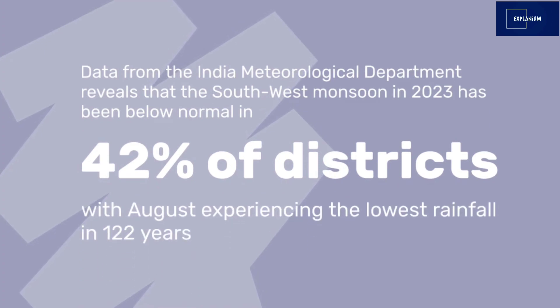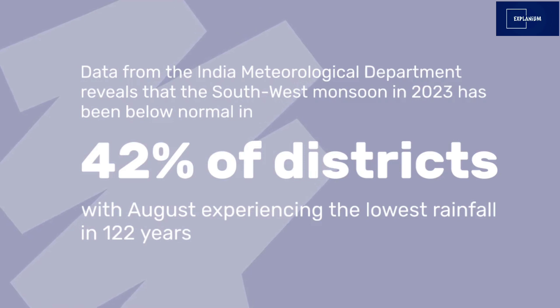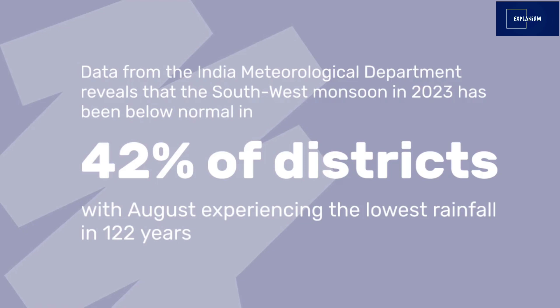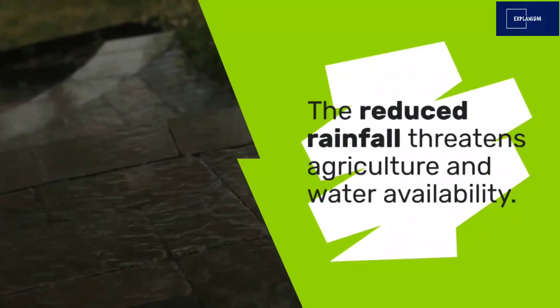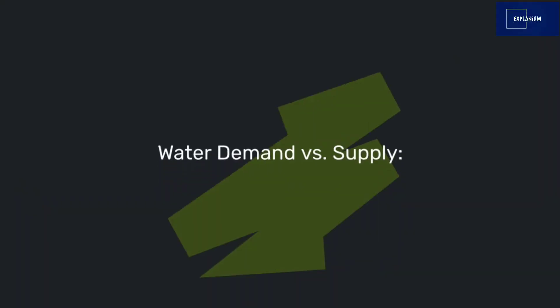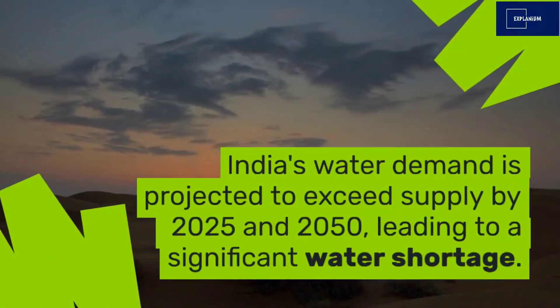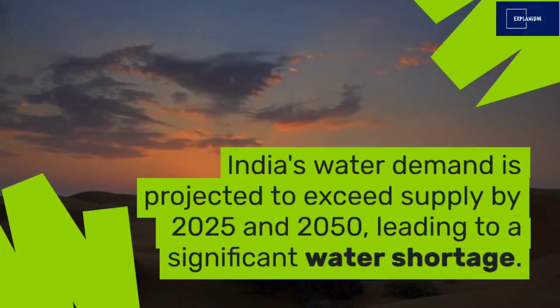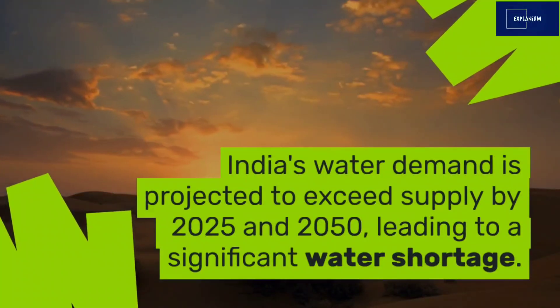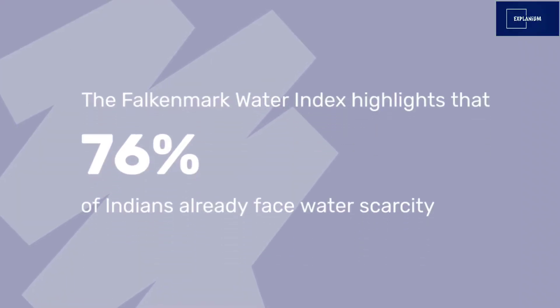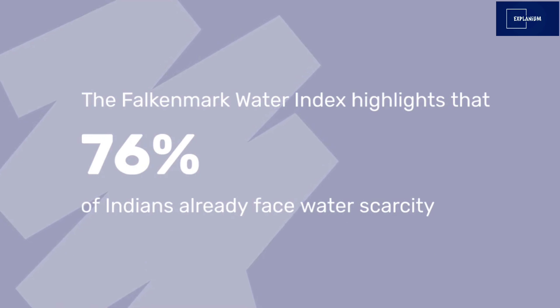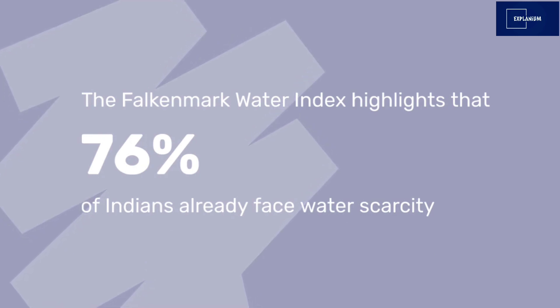Data from the India Meteorological Department reveals that the southwest monsoon in 2023 has been below normal in 42% of districts, with August experiencing the lowest rainfall in 122 years. The reduced rainfall threatens agriculture and water availability. India's water demand is projected to exceed supply by 2025 and 2050, and the Falkenmark Water Index highlights that 76% of Indians already face water scarcity, emphasizing the urgency of addressing the issue.